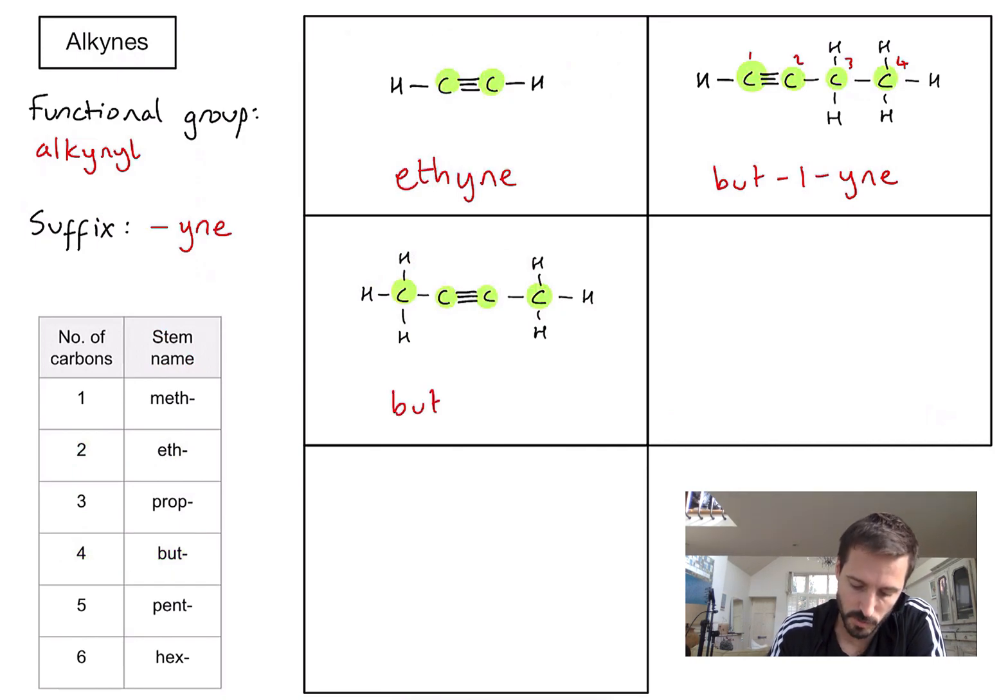So I can write down my bute. And the triple bond is in a different place this time. So let's just for clarity label my carbons one, two, three, four. Where does that triple bond begin? It begins on the second carbon. So this is going to be but-2-yne.